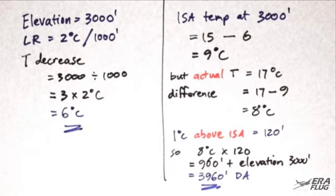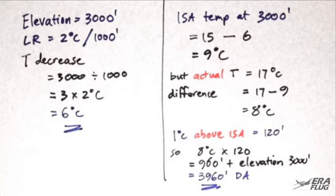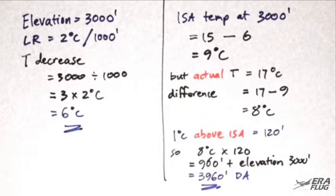Can you see the problem? You are at 3,000 feet above mean sea level, but the aircraft will perform as if you are at 4,000 feet. In other words, your take-off run will be longer due to the lower air density.